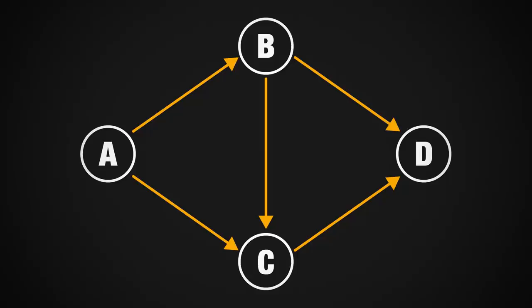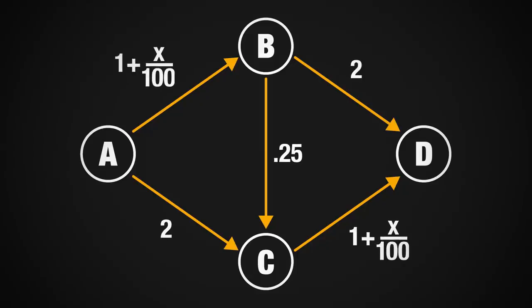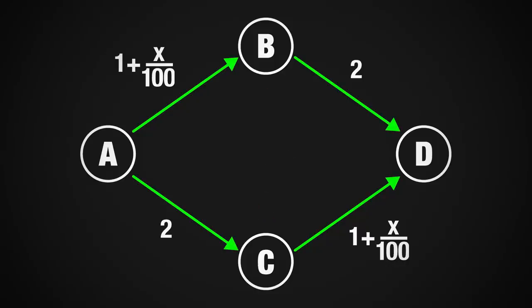Now here's the weird part. If you put numbers to this, you find that a traffic pattern like this is actually faster when you remove the shortcut. The average travel time for each driver goes down.